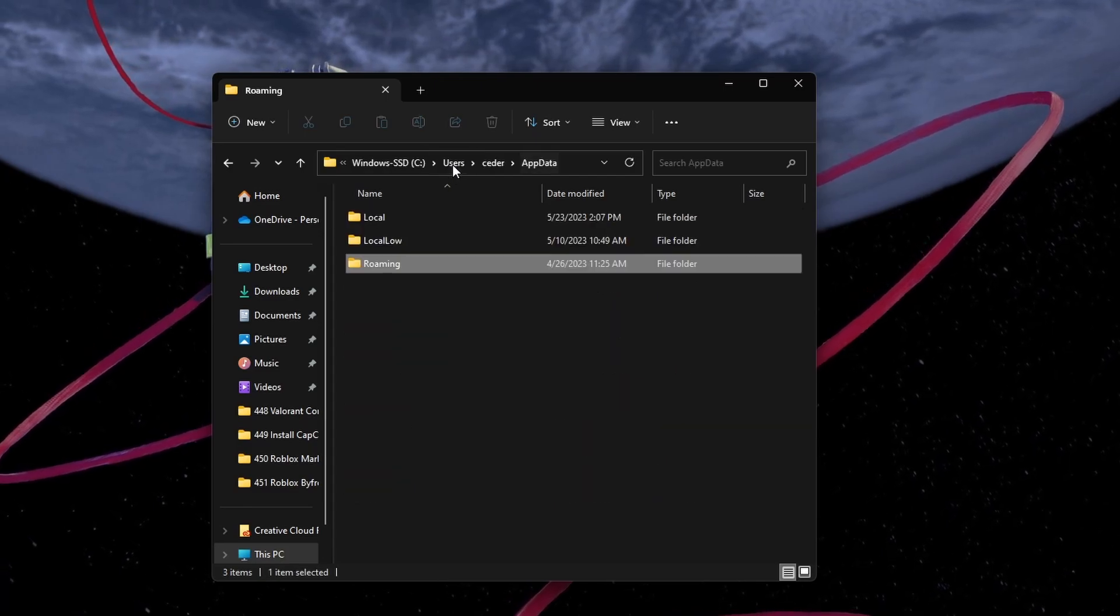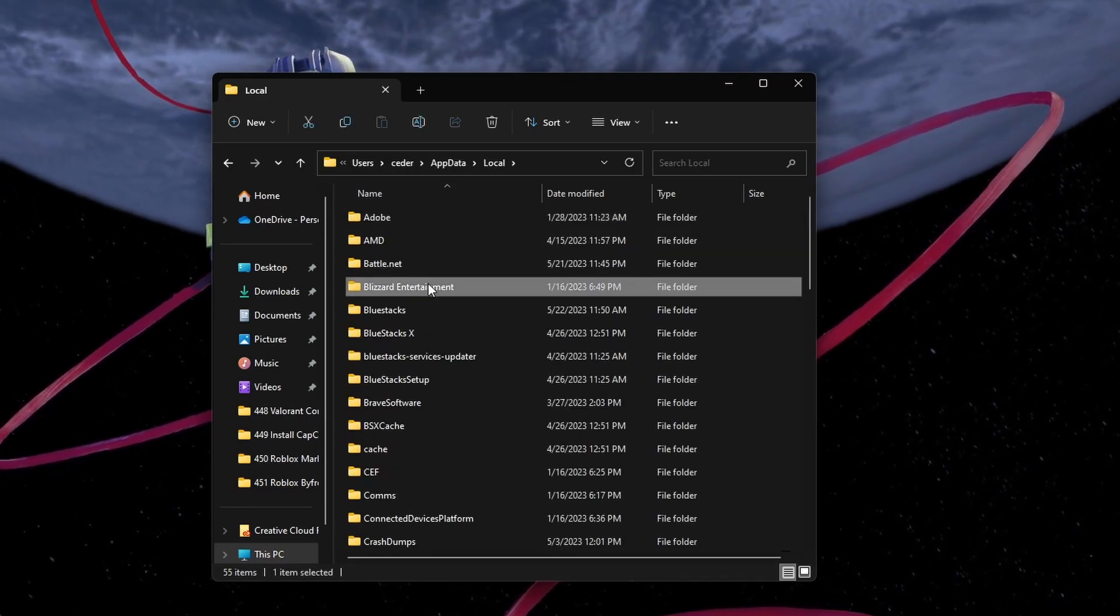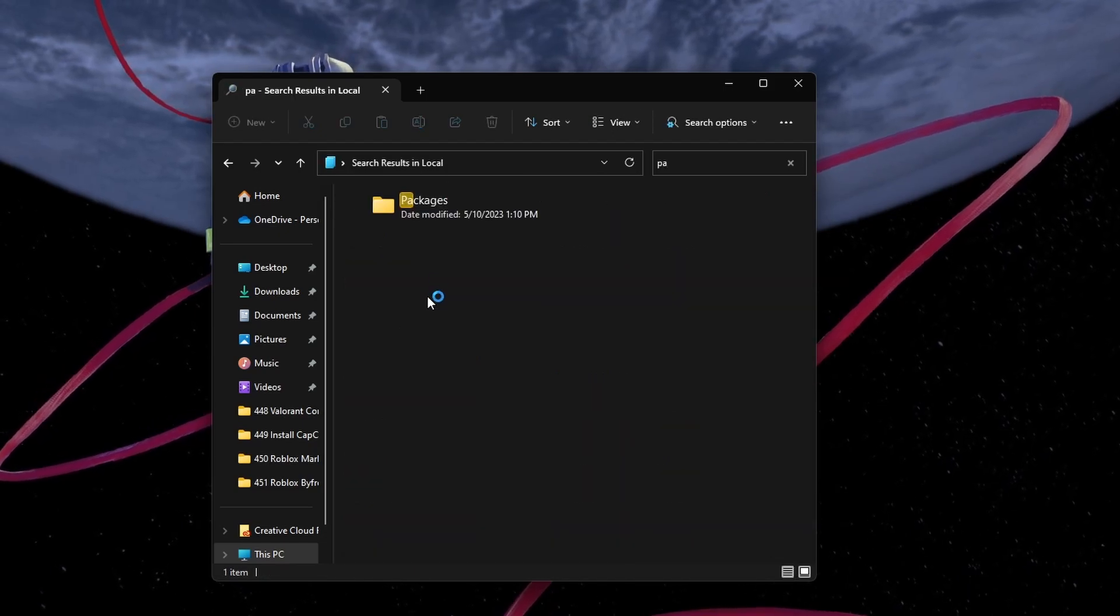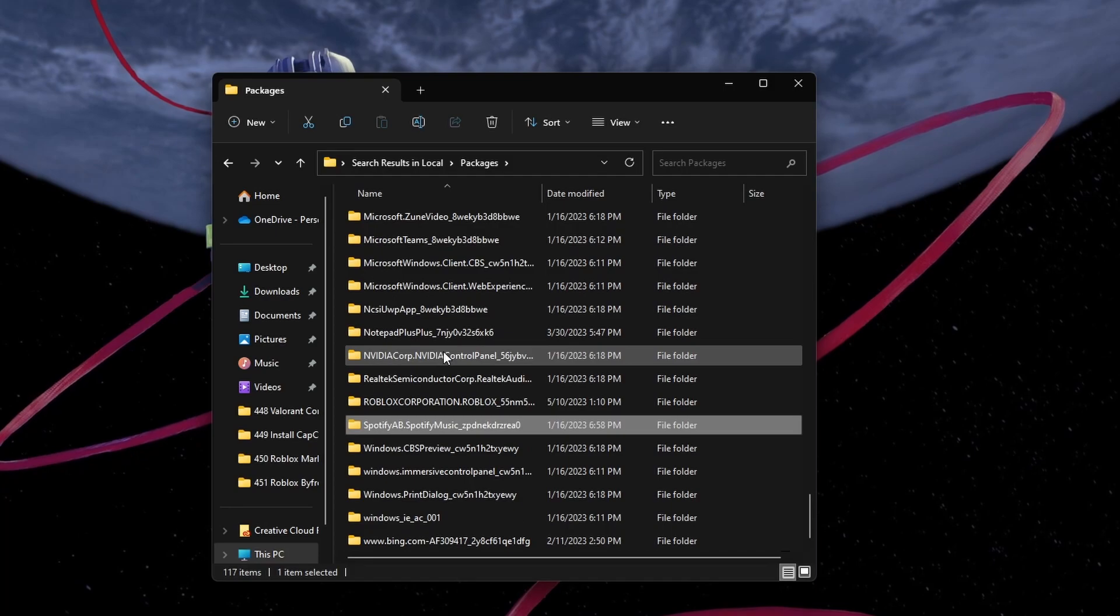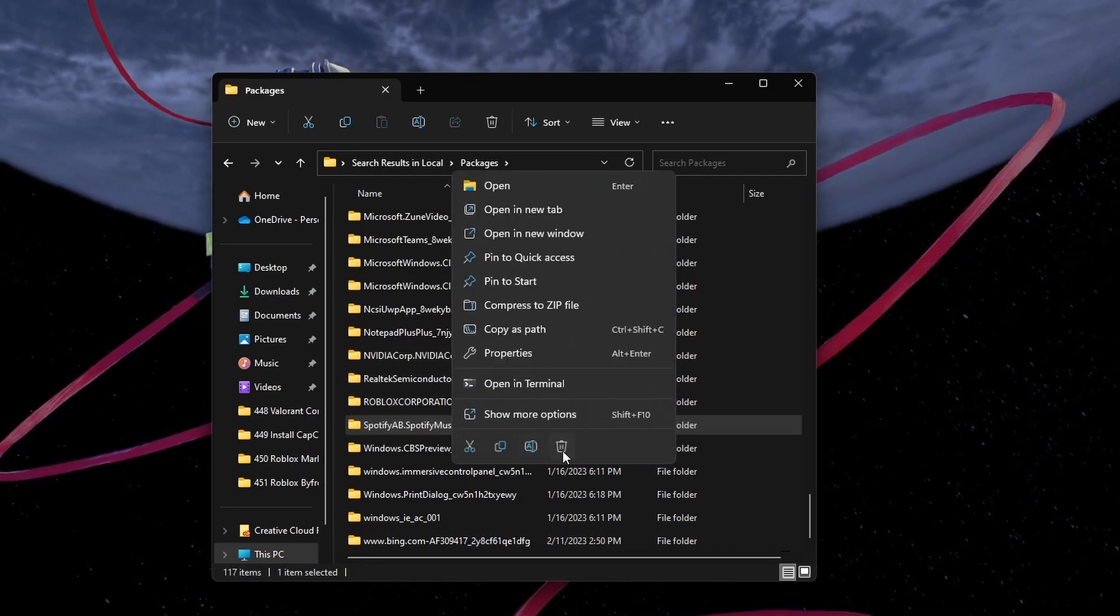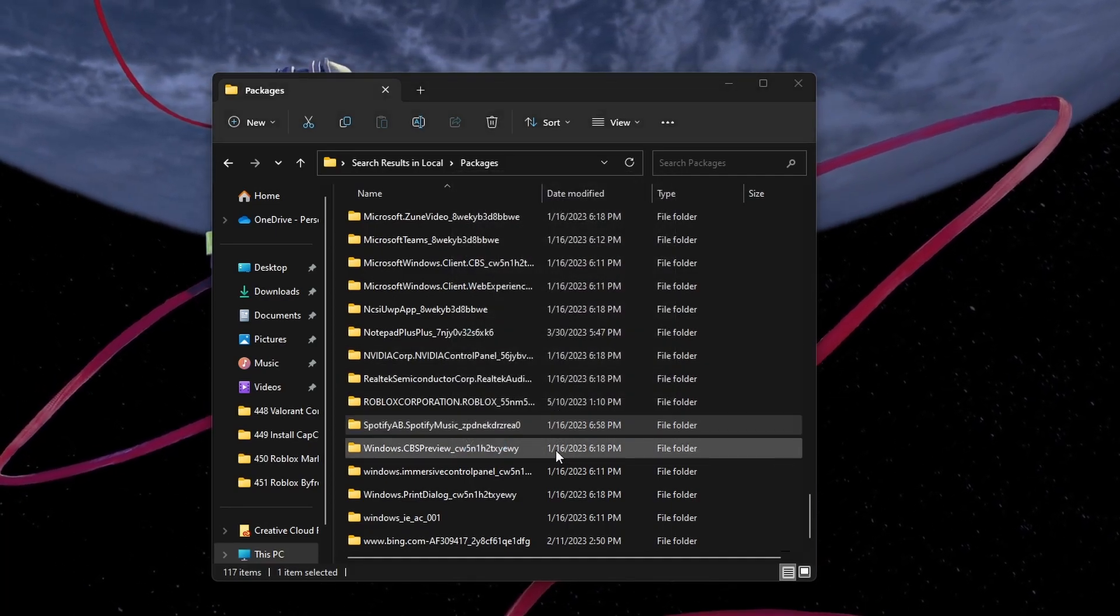From here, navigate to AppData, Local, Packages. Here, select any folder and start typing Spotify. Proceed to delete the highlighted Spotify AB Spotify Music folder.